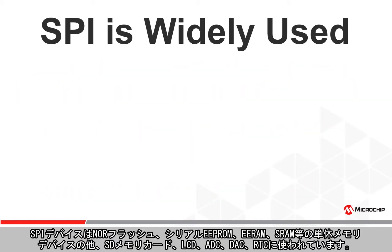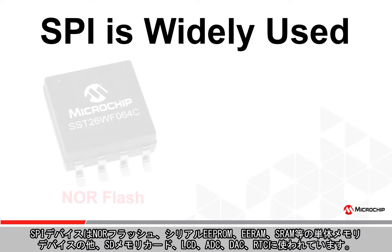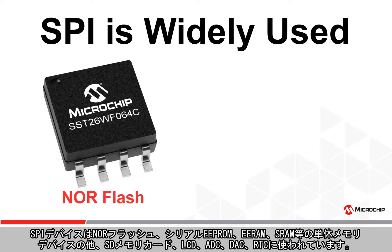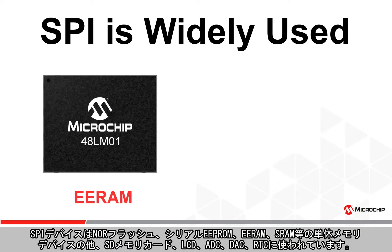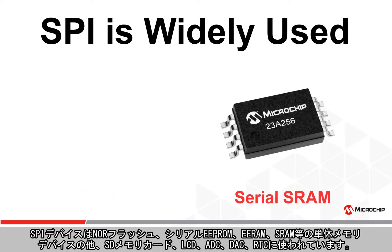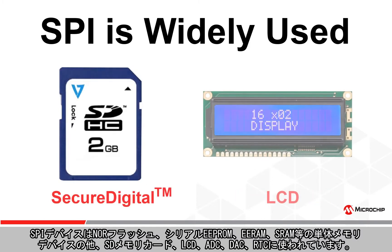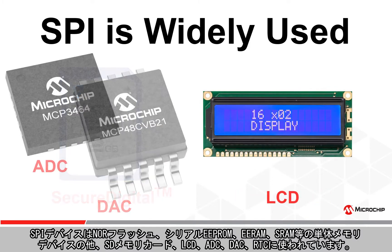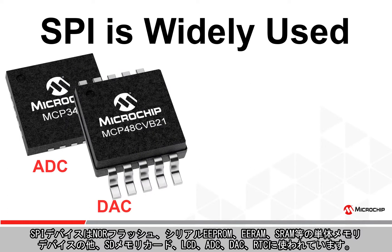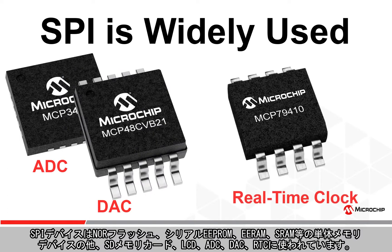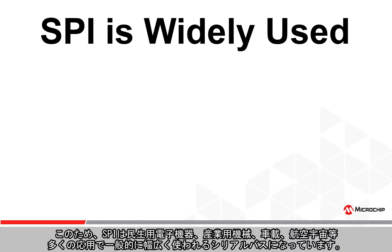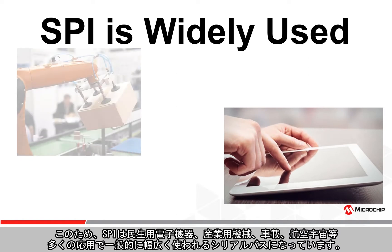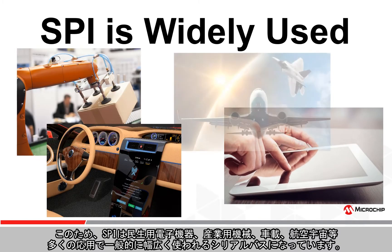SPI devices are found in standalone memory devices like NOR Flash, Serial EEPROMs, EERAMs, and SRAM devices, as well as secured digital memory cards, liquid crystal displays, A-to-D and D-to-A converters, and real-time clocks. This makes SPI a common and widely used serial bus across many applications including consumer electronics, industrial equipment, automotive, and aerospace.